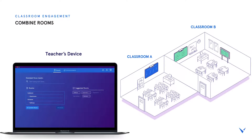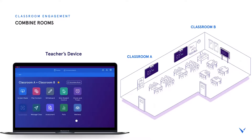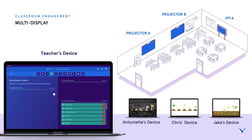Creating flexible learning spaces is easy with Vivi's Combine Rooms feature. By selecting Combine Rooms in the Vivi app, teachers can choose multiple rooms and temporarily combine them so that they now have control to share content to every display in the space. In multi-display learning environments, teachers can easily assign different content to specific displays or the same content to all displays.